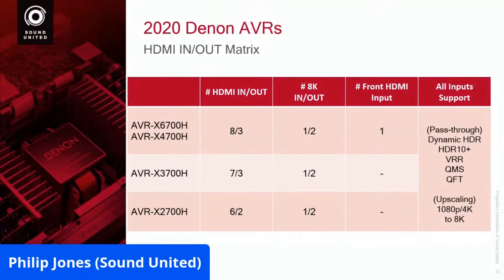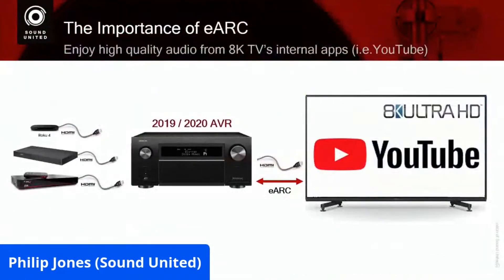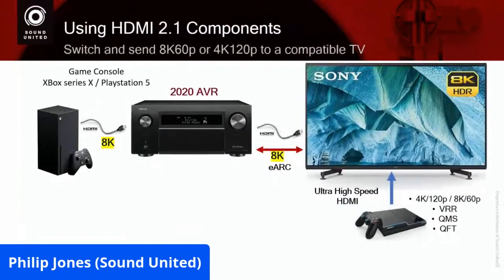In the conceivable future, when we have more than one source that does 8K, you don't necessarily have to ditch this receiver because we'll have eARC. You can plug those 8K sources into your display and still transmit the audio back to the AVR. The first 8K movie content is probably going to be internal applications from Sony, Samsung, and LG. You're going to need to send the audio to the receiver via eARC to get the uncompressed audio. Worst case, you plug one source into the TV and one directly into the AVR and use eARC.